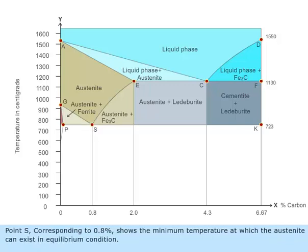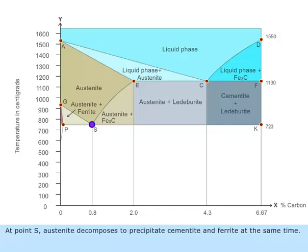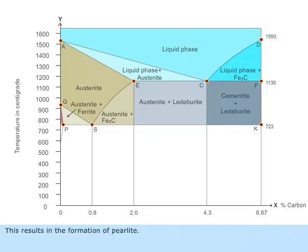Point S, corresponding to 0.8 percentage, shows the minimum temperature at which the austenite can exist in equilibrium condition. At point S, austenite decomposes to precipitate cementite and ferrite at the same time. This results in the formation of pearlite.